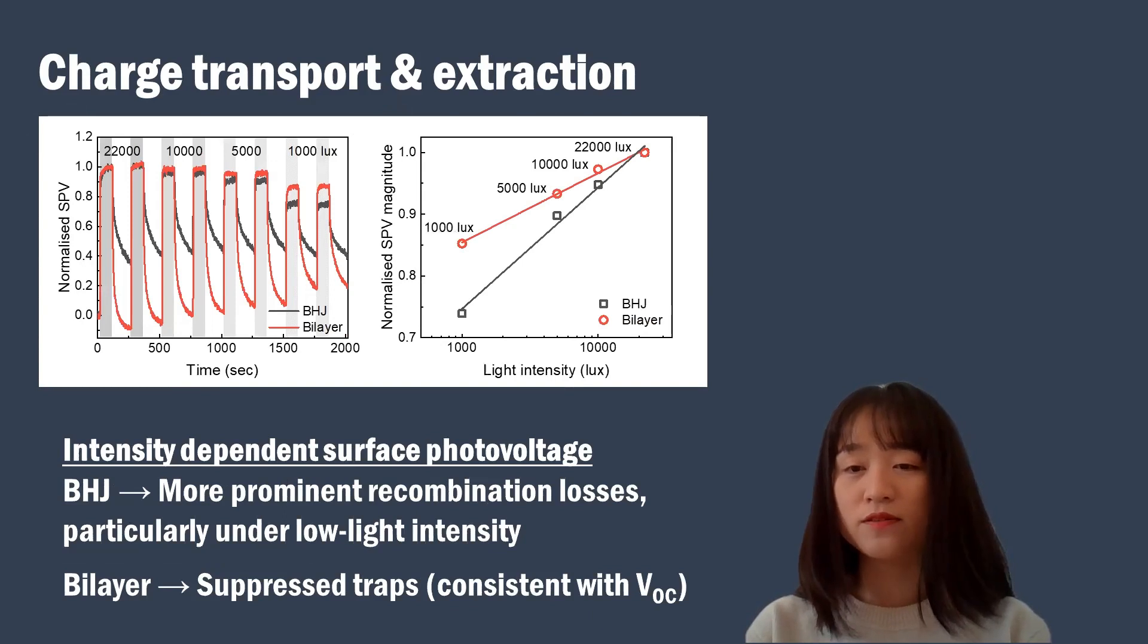Light intensity-dependent surface photovoltage data can tell us that bulk-heterojunction devices have more prominent recombination losses, particularly under low light intensity, as the SPV magnitude decreases more with decreasing light intensity. Bilayer devices show less dependence of SPV magnitude upon the light intensity, which is also indicative of suppressed traps. This result is well consistent with open circuit voltage versus light intensity characteristic, which I mentioned previously.